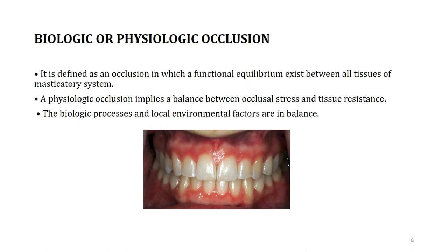Talking about biologic or physiologic occlusion, which is defined as a functional equilibrium that exists between all the tissues of the masticatory system. That means there is an opposing force which is balanced together. There has to be a state of equilibrium and the factors — all the stresses, all the resistance, and all the environmental factors — are in balance in this occlusion.